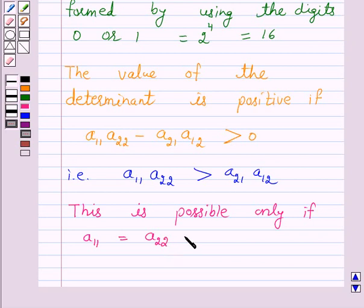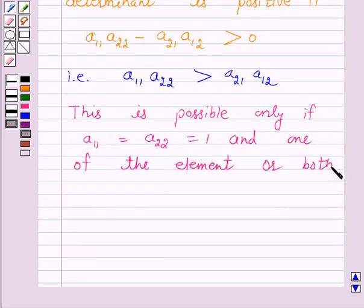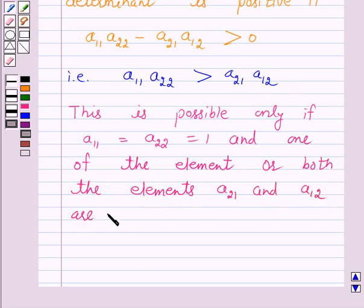to a22 is equal to 1 and one of the element or both the elements a21 and a12 are 0.